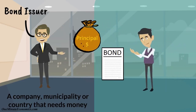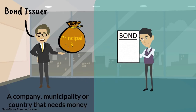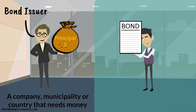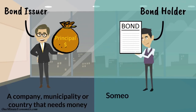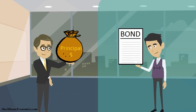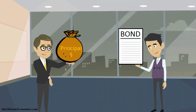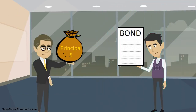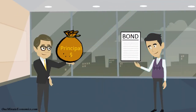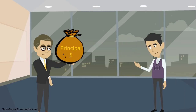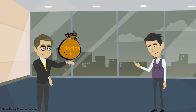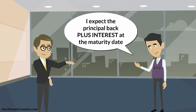The issuer receives that money from another entity, intuitively called the bondholder — maybe a person, perhaps a company, or a country. Of course, the bondholder doesn't just want the principal back from the bond issuer. He also expects interest on top of that, also called the coupon.